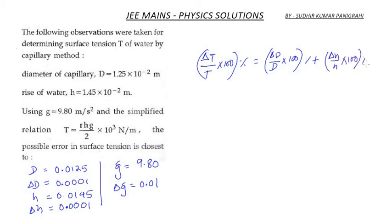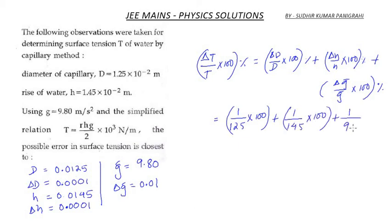Which is equals to 1 divided by 125 into 100 plus 1 divided by 145 into 100 plus 1 divided by 980 into 100, which equals 1.59 percentage.